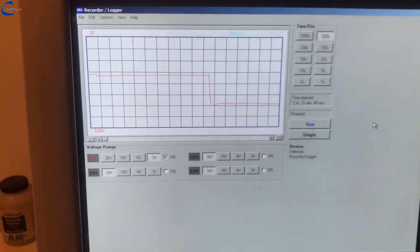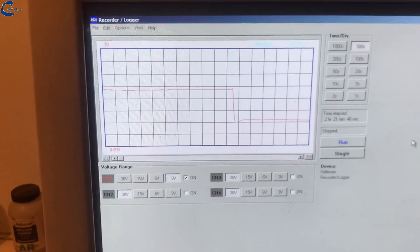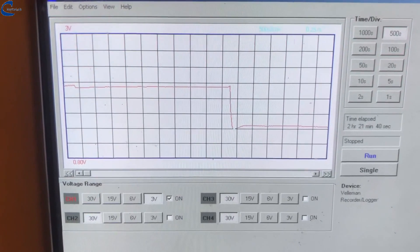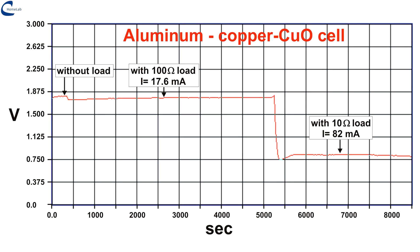The data logger was set for a recording of 8,500 seconds, 2 hours and 21 minutes. At the end of the recording it can be seen in the graph that the no load voltage is 1.80 volts.